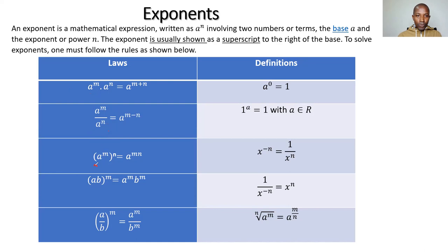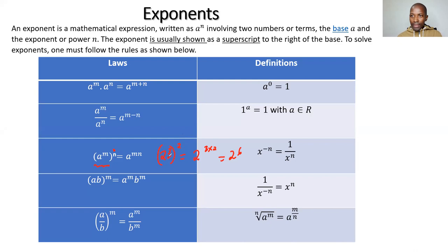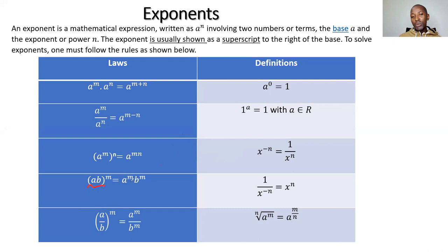The third law: 'a to the power m, to the power n' simply means 'a to the power m times n'. For example, 2 to the power 3, to the power 2, is 2 to the power 3 times 2, which is 2 to the power 6. You don't square the 3 - you multiply 3 times 2. That's another rule.